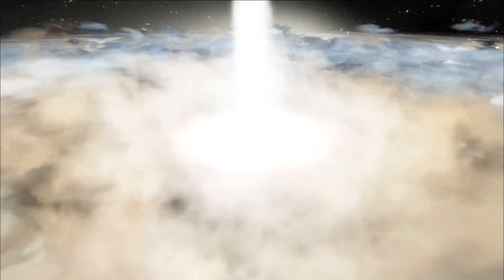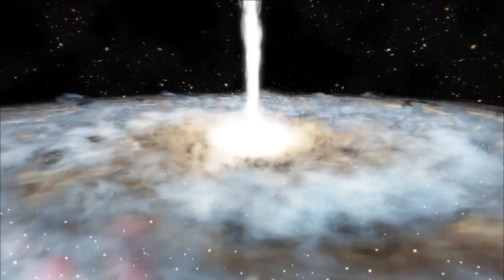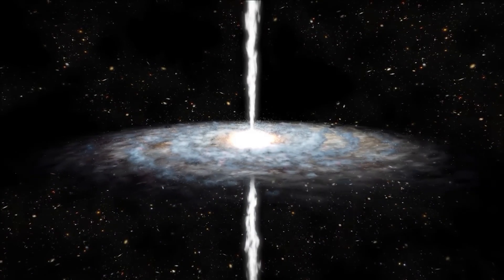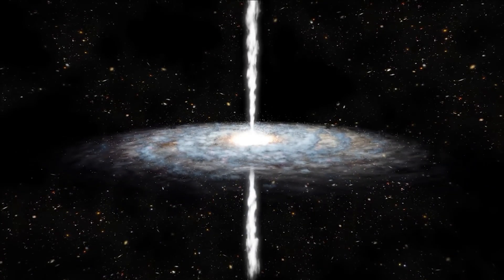Some scientists have proposed the idea of a wormhole connecting a black hole and a white hole, suggesting that they could be different manifestations of a unified phenomenon. According to this idea, matter falling into a black hole could emerge from a white hole in a different region of spacetime or even another universe.